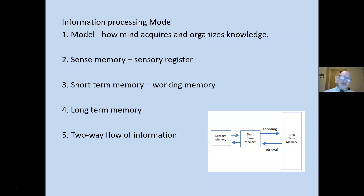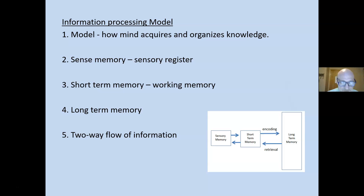The information processing model describes how the mind acquires and organizes knowledge. We have sense memory or sense register, which can hold a lot of information for a short duration. Short-term or working memory holds 7 plus or minus 2 bits of information for about 15 seconds. Long-term memory is almost unlimited — but it's not simply about storage; it's about the retrieval of information. There is interference, sometimes called forgetting, that gets in the way of retrieving information. There is a two-way flow of information from sense memory to short-term to long-term and back, which reflects neurological learning theory's top-down flow. All these theories share common, repeated elements.